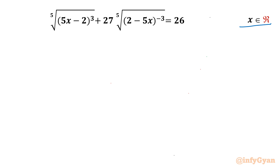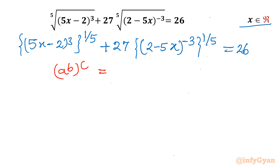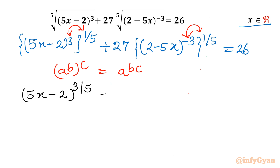Let's get started by using exponent law. I will rewrite our equation as (5x minus 2) whole power 3, and then apply the 5th root as power 1 over 5, plus 27 times (2 minus 5x) whole power minus 3, and then whole power 1 over 5, equal to 26. Using the exponent law (a^b)^c = a^(bc), I can multiply the two powers, giving (5x minus 2)^(3/5) plus 27 times (2 minus 5x)^(-3/5) equal to 26.